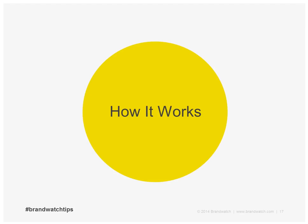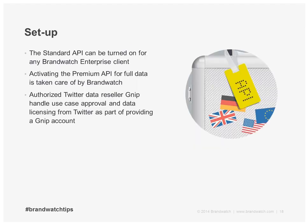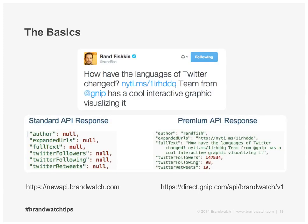So how does it work? In terms of setup, any of our enterprise clients can use the standard API. We handle the activation of the premium API for users who choose to take it up, working with Gnip to get it up and running for you. Gnip are an authorized Twitter data reseller, so they handle the use case approval and data licensing from Twitter as part of the service. We're going to look at some basics of how the API actually works — not a deep technical dive, just some simple characteristics of the API functionality.